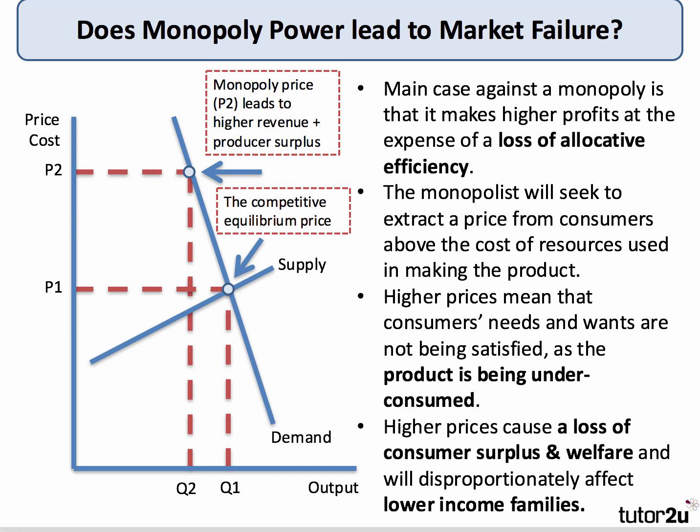The main case against monopoly is that firms can use their market power to make higher profits at the expense of the consumer, and that leads to a loss of allocative efficiency — effectively a loss of consumer surplus. The monopolist will try to extract a price from consumers above the marginal cost of the resources used in making the product. The result is that monopoly prices much higher than under competition mean consumer needs and wants are not fully satisfied, as the product is under-consumed. That is a cause of market failure.